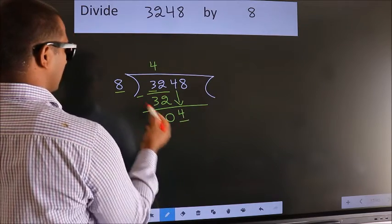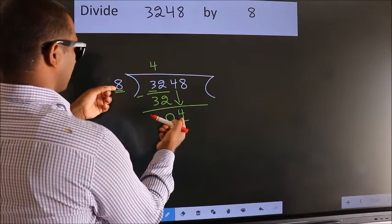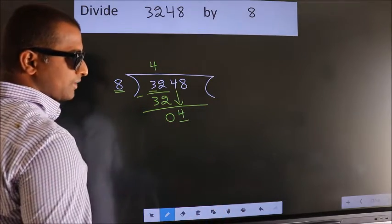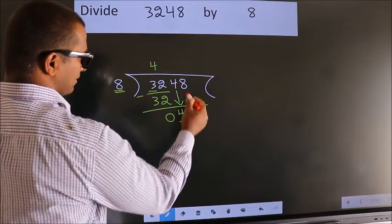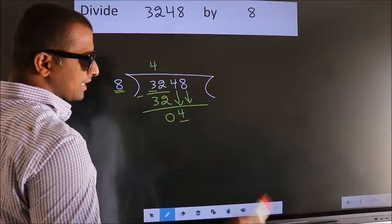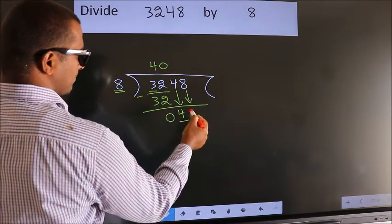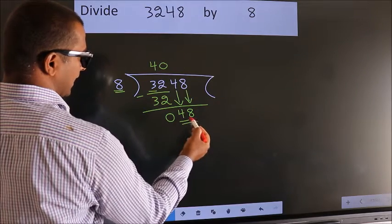Here we have 4. Here 8. 4 smaller than 8. So, we should bring down the second number. And the rule to bring down second number is put 0 here. Then only we can bring down this number. So, 48.